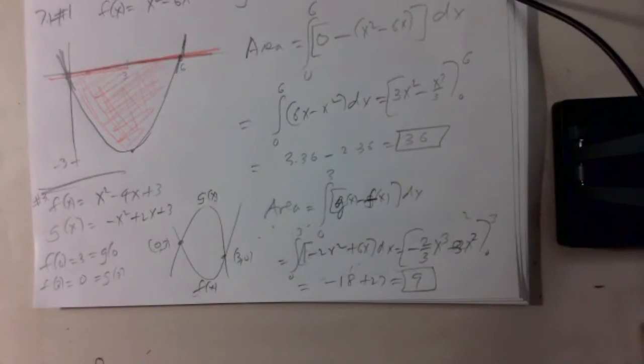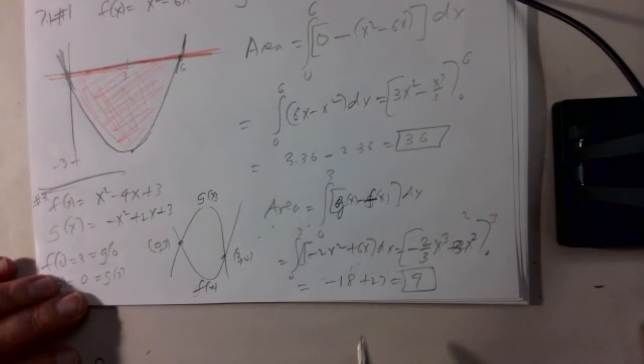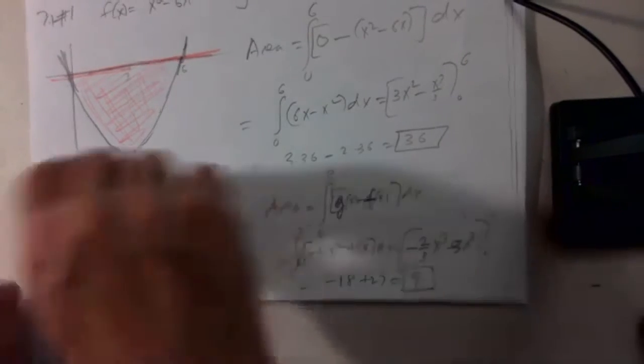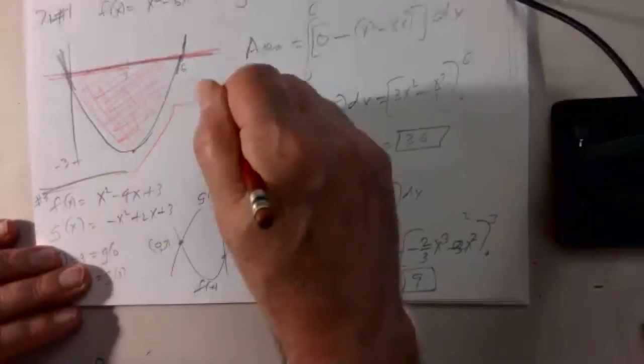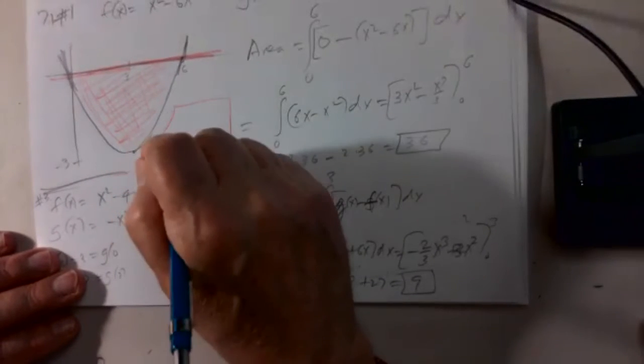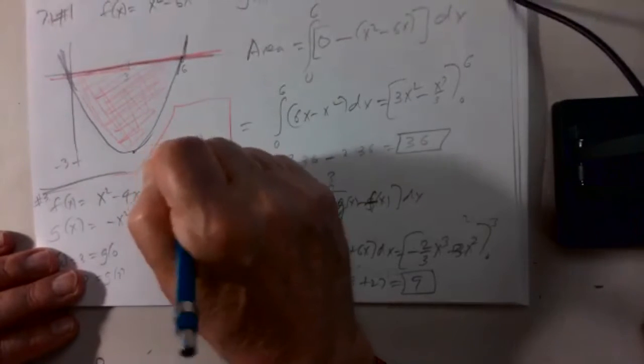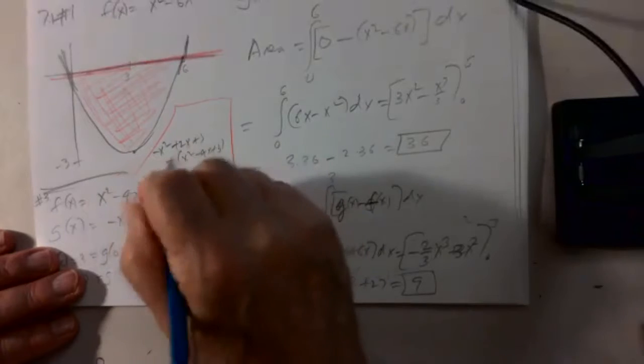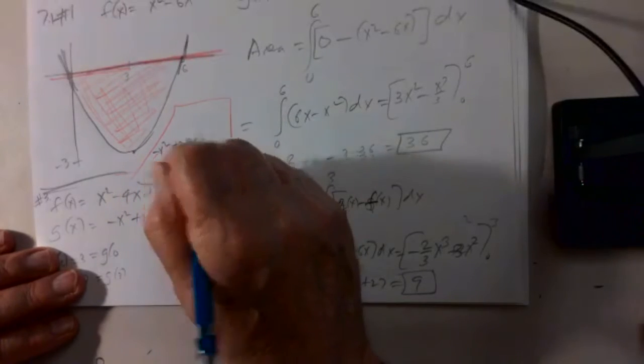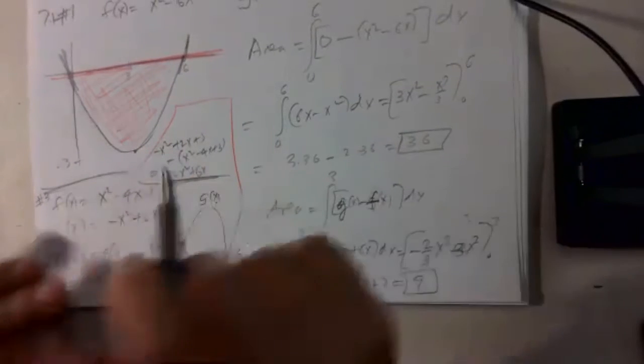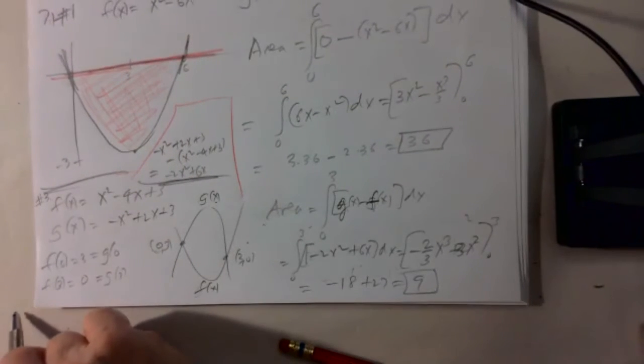Okay, so wait, how did you get the negative 2x squared plus 6x? So I'm integrating g of x minus f of x. You just did negative x squared plus 2x plus 3, subtract x squared minus 4x plus 3 is minus 2x squared, 2x plus 4x is 6x, 3 minus 3 is 0. That's just subtracting. Okay, you got it.